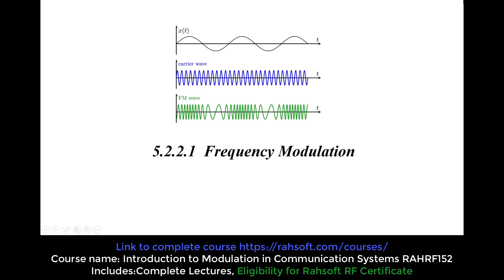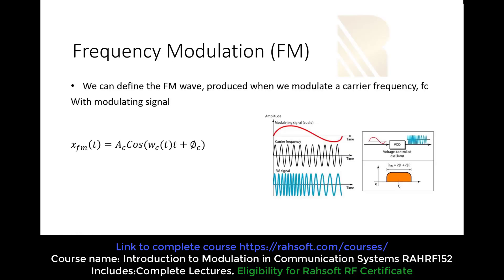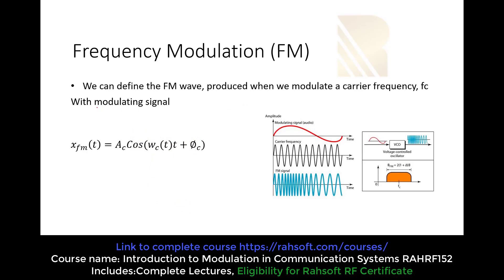In this part we are going to talk about frequency modulation. What is frequency modulation or FM? We can define this as the wave produced when we modulate a carrier frequency. This time we are going to modulate the frequency — we are not going to touch the amplitude. The frequency of our carrier is FC, and we are going to change this frequency with a modulating signal. The modulating signal is actually our data, and we are going to change the frequency of the carrier according to this data.